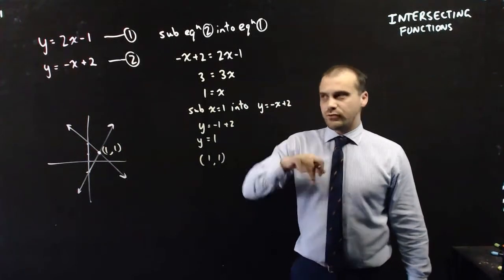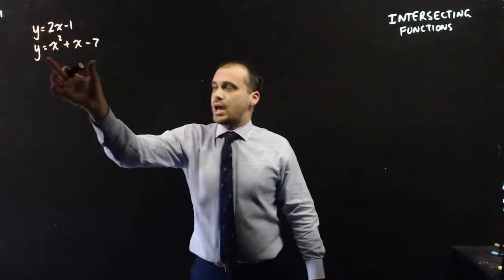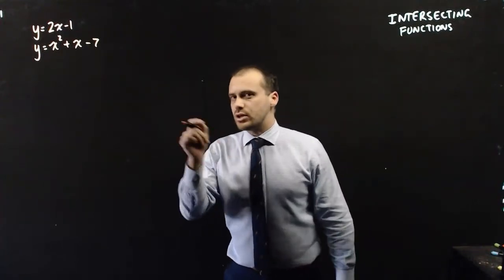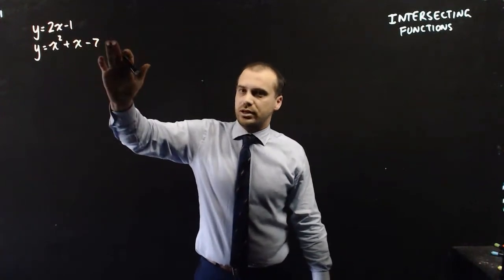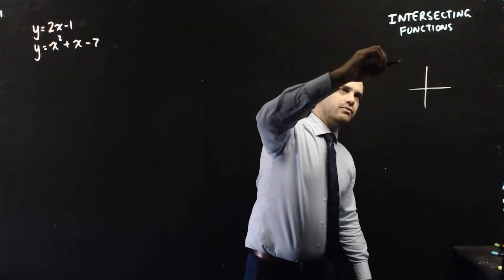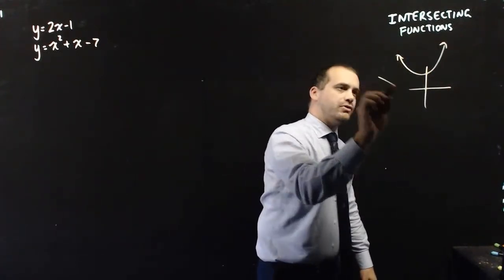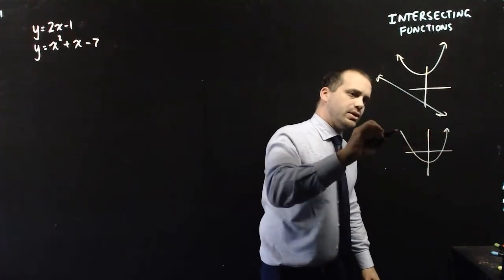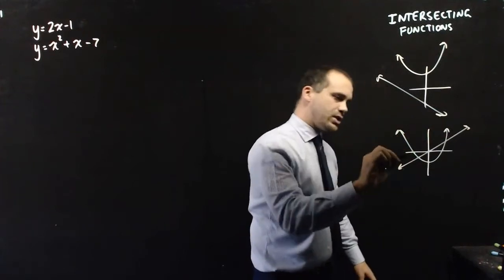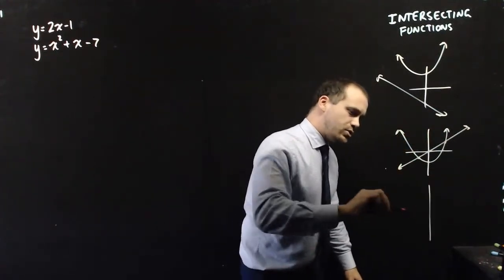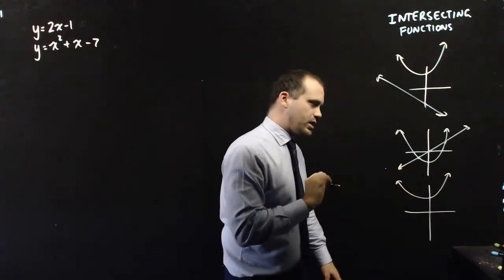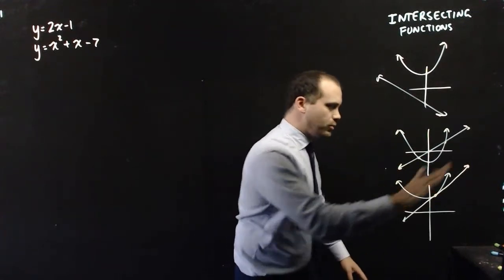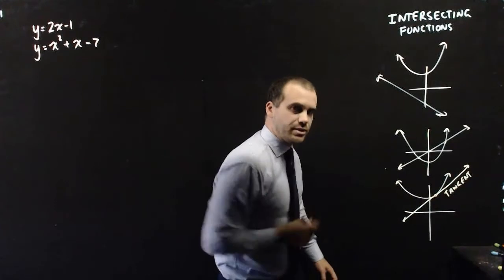We can do the same thing for more complicated functions. Here I have a linear equation and a quadratic equation, and I want to know where they intersect — the point or points of intersection. When you've got a linear and a quadratic equation, there are three different things that could happen: no points of intersection, two solutions, or a very special case where the linear equation just touches the quadratic at a single point — what we call a tangent.